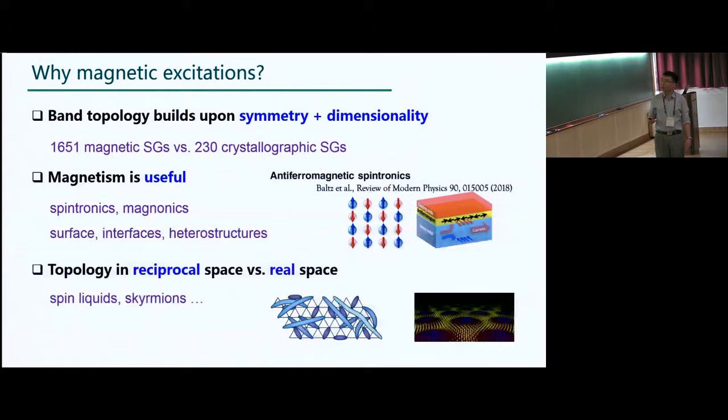And the third reason, perhaps is the most relevant context to this conference, is that when we think about, for instance, spin liquids or also skyrmion structures, we have topology in real space, whereas band topology is mainly about reciprocal space. Now, how to connect these two? I think it will pose an important question for all of us.